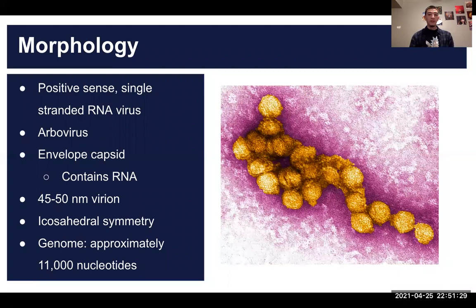Next we move into the morphology. The West Nile virus is a positive sense single-stranded RNA virus. It is an Arbovirus, which is short for arthropod-borne virus. This means that the virus is transmitted through arthropods such as mosquitoes. The virus itself is spherical with an envelope capsid that contains the RNA.